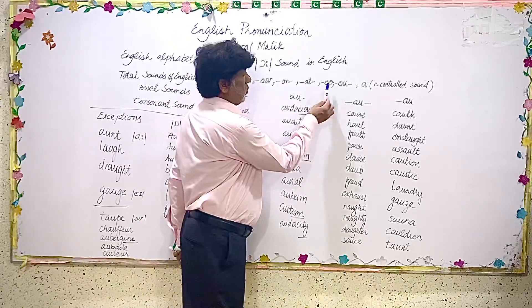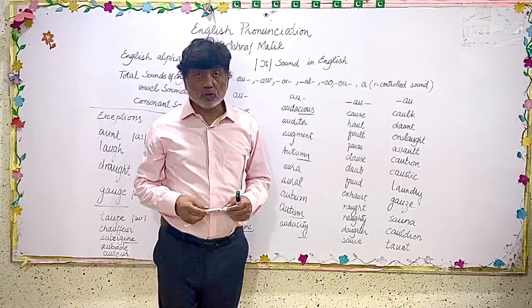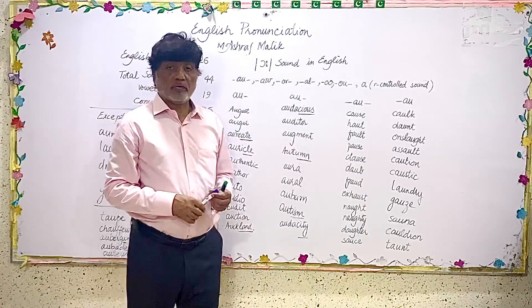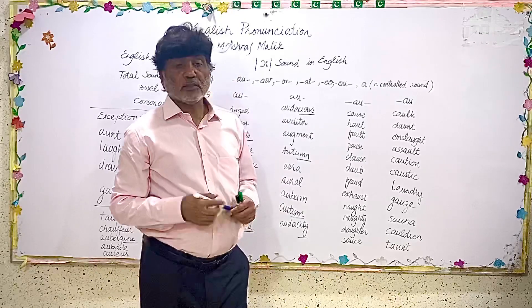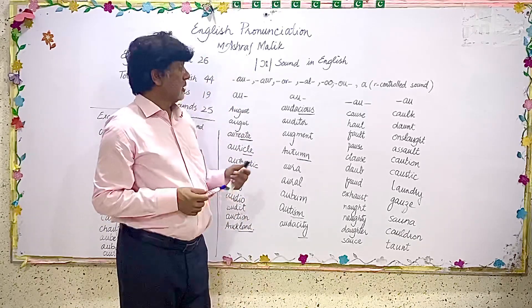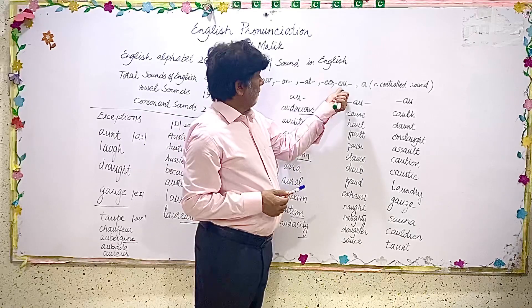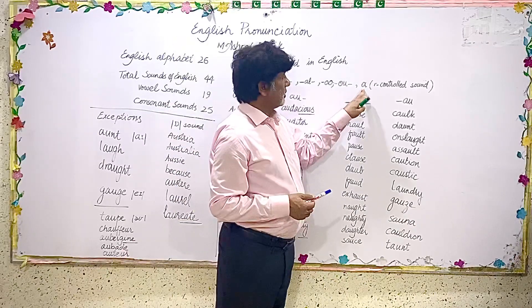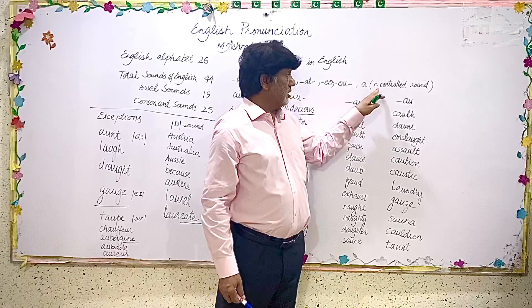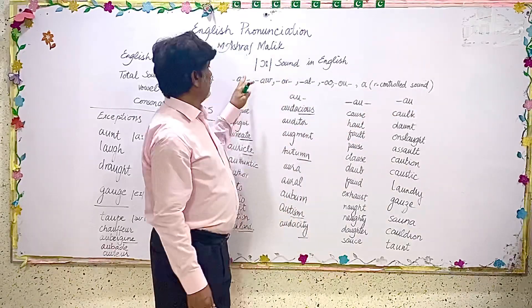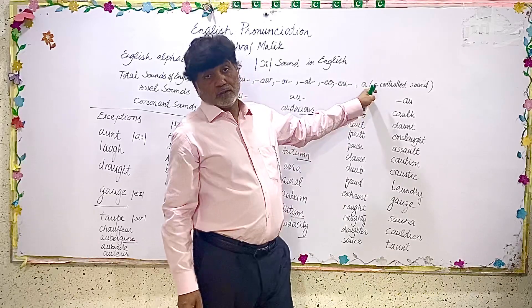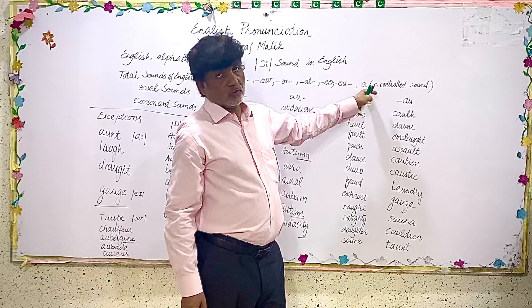Sometimes when O and O come together, they may also give us the sound O, like in 'do' and 'po.' Sometimes when O and U come together, they may give us the sound O, like in 'pour' and 'brought' — B-R-O-U-G-H-T. There are so many different ways we can have the same sound. In certain cases, A can also give us the sound O. There are some R-controlled vowel sounds which give us the sound O. For example: woke, talk, stalk, chalk.